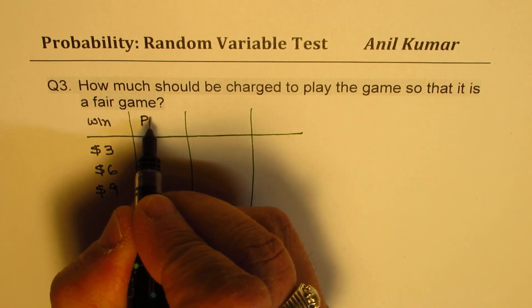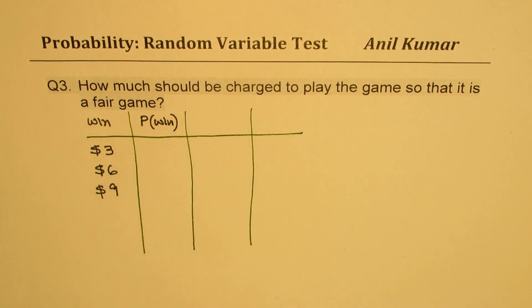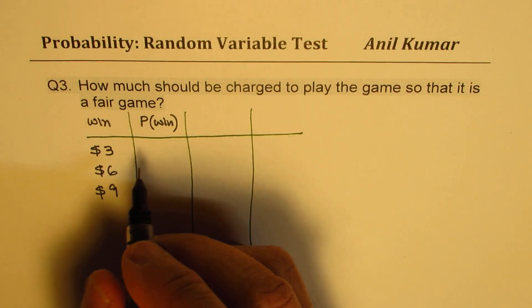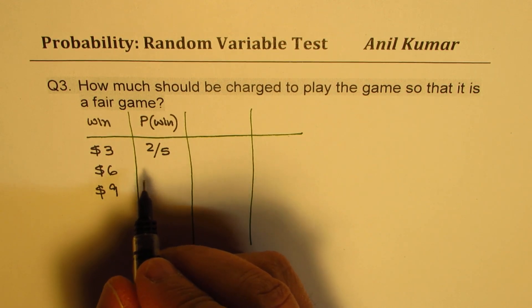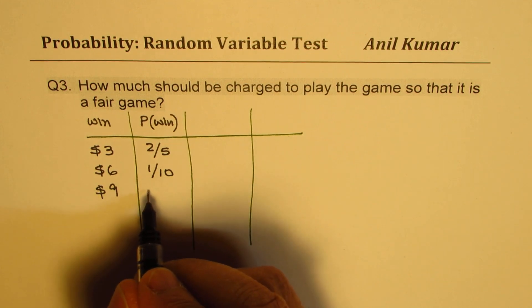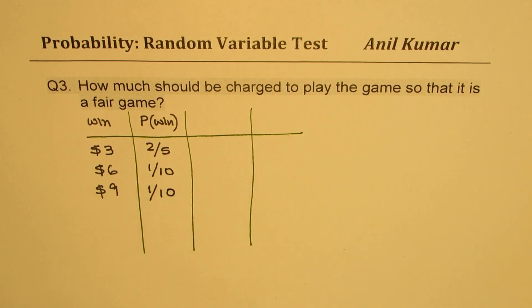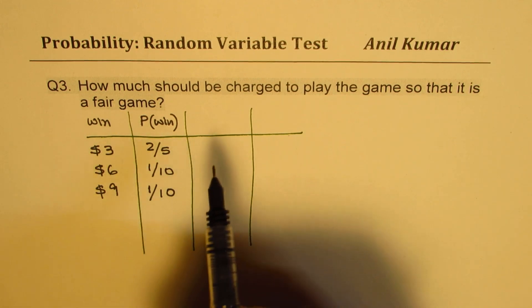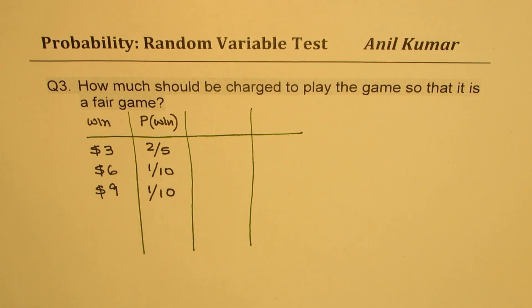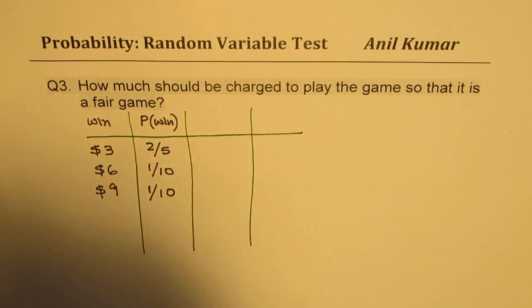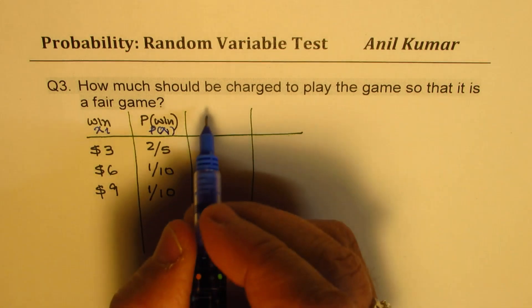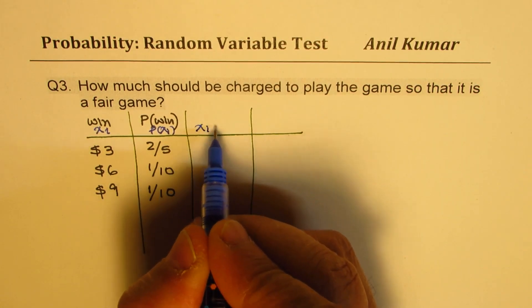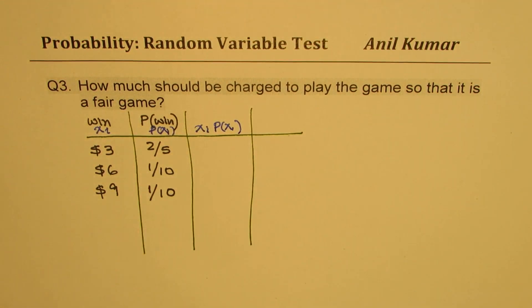So what is the probability of these winnings? Probability of winning $3 came out to be 2 out of 5. That of $6 was 1 out of 10. And for $9 also it was 1 out of 10. Now, to get the fair amount, what should we do? So these are the random variables. So we are saying that Xi, and this is the probability of Xi, their product we have to find.